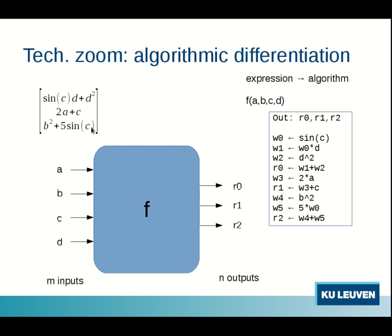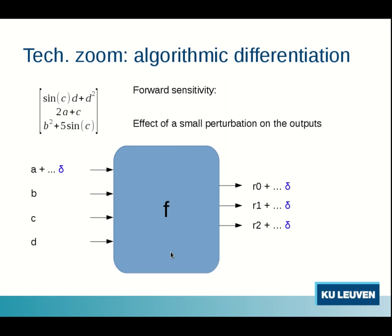And this function f we can describe as an algorithm, as a recipe of very simple instructions and each instruction that is listed here is a very simple operation which takes at most two arguments. So this is the setup. Let's talk about the function here. We could wonder what happens if we perturb one of the inputs of this function. We put a small delta there. What would happen to the outputs?